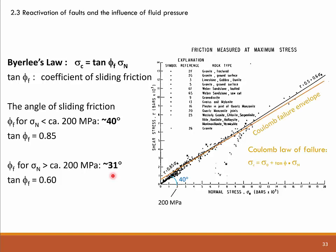We now superimpose Coulomb's Law of Failure. You will see that the Coulomb failure envelope is more or less parallel to the envelope of sliding friction at higher stresses. Normal stresses here are given in kilobars — megapascals would simply be the same numbers times 100, so 2 kilobars normal stress corresponds to 200 MPa using the more modern unit for stress.